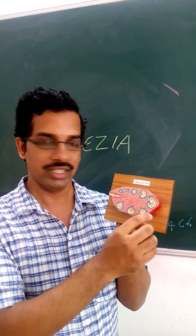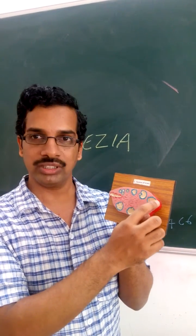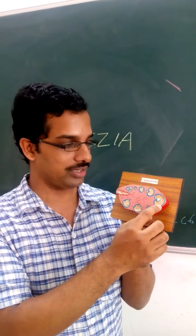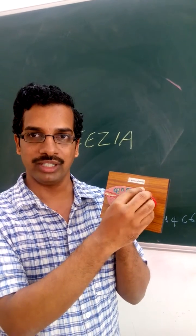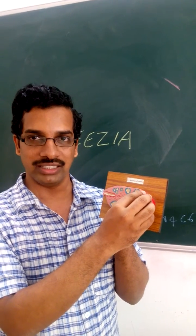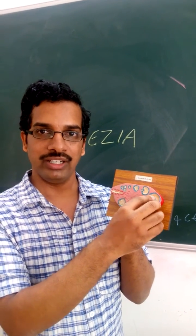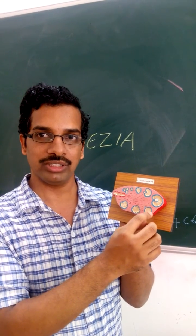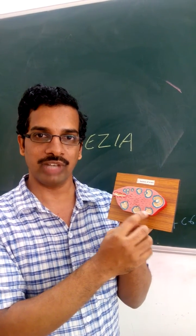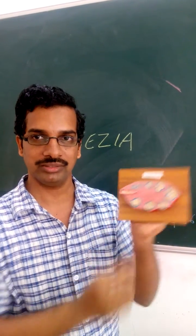If the zygote gets implanted in the uterus, the corpus luteum will be formed from the Graafian follicle cells. If it doesn't implant, or if there is no pregnancy, then the corpus luteum will become the corpus albicans.